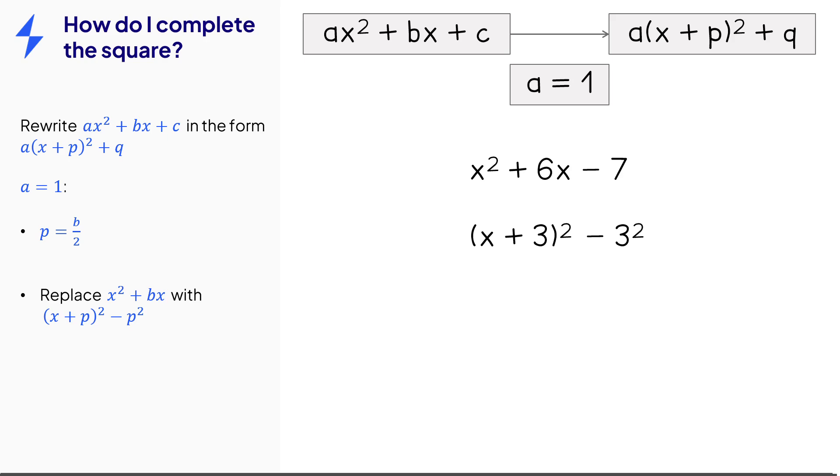So all we need to do is just add the constant on at the end so minus the 7 and then simplify to get our final answer.